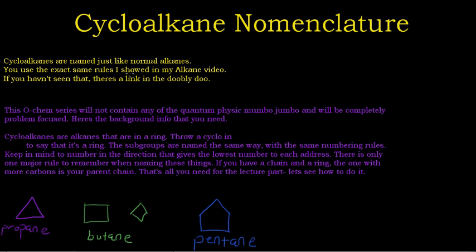Cycloalkanes are alkanes that are in a ring. You throw cyclo in there to say that it's a ring. The subgroups are named the same way with the same numbering rules. Keep in mind to number in the direction that gives you the lowest number to each address. There is only one major rule to remember when naming these things. If you have a chain and a ring, the one with more carbons in it is your parent chain.